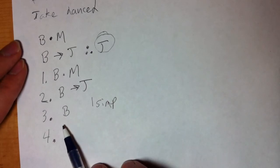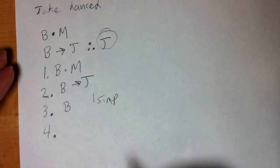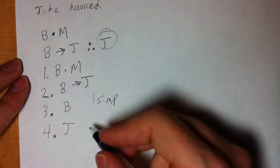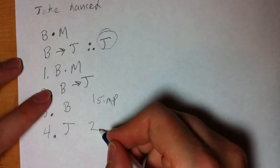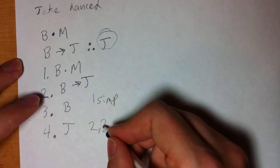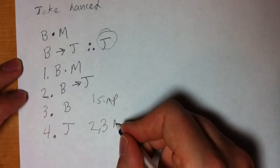Now that I know that Bill danced, well if Bill dances then Jake dances, and I know that Bill danced. That's just regular old modus ponens. I use the conditional from line two and the antecedent was confirmed in line three, and that's modus ponens. I finished because I got the conclusion.